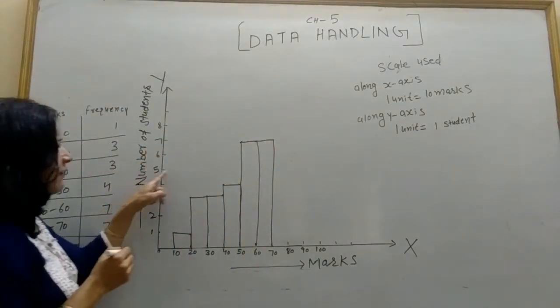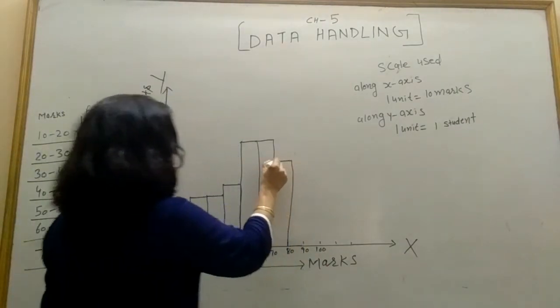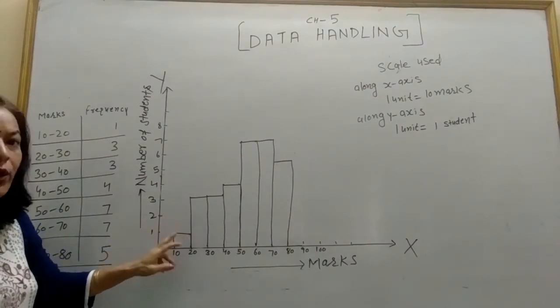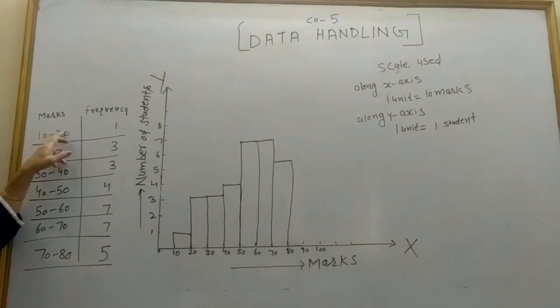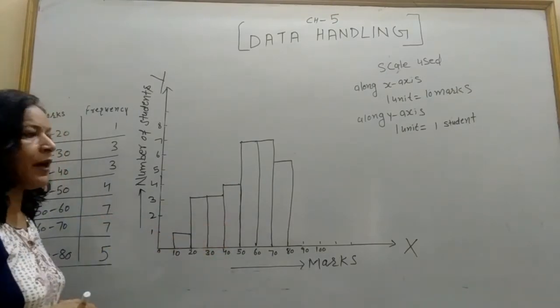70 to 85, five students, here, parallel to this. There are bars, but no gap between the bars, because we are having continuous data. 10 to 20, 20 to 30, 30 to 40, no gap between the bars.